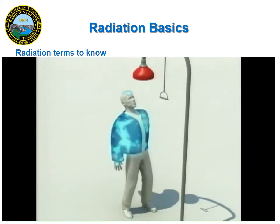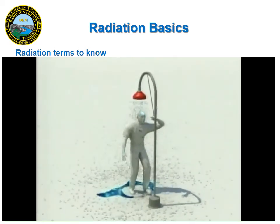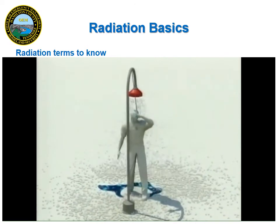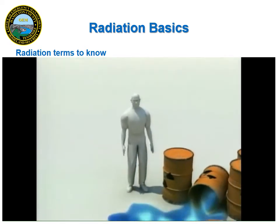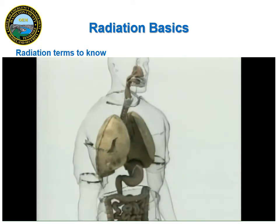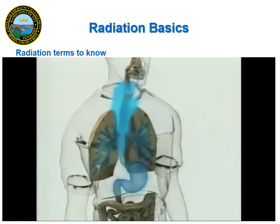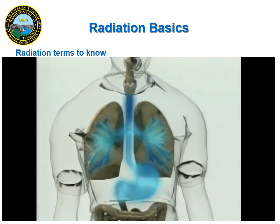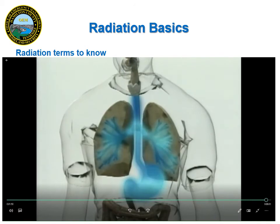External contamination refers to radioactive material on the outside of the body. When a person becomes externally contaminated, simply removing the clothing can remove as much as 90 percent of the contamination. Gently washing the skin and hair can remove most of what remains. If a person ingests or inhales radioactive material, it can become incorporated in the organs of the body, and this is called internal contamination. Depending on the type of radioactive material, certain medications can be administered to accelerate the rate at which the material is eliminated from the body. Examples of such medications include Prussian Blue and DTPA.